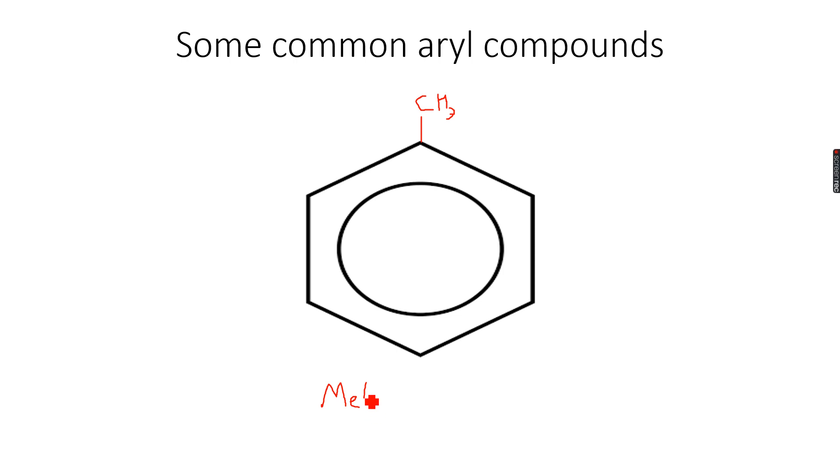Because we have a methyl group attached to a benzene molecule, so we have methylbenzene. And the last one that we are going to do is we attach a carboxylic acid group over here, CO2H, and when we attach a carboxylic acid group over here, this becomes benzoic acid.